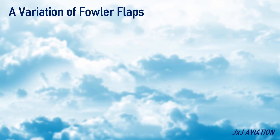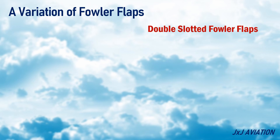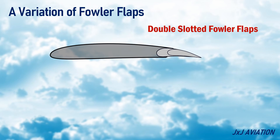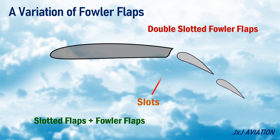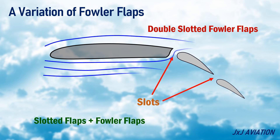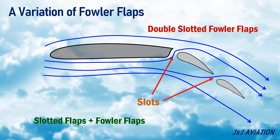A variation of Fowler flaps is the double slotted Fowler flap. This is a combination of slotted flaps and Fowler flaps. The flap moves rearward and then extends downwards. There are two slots in these flaps, which allows air to flow from the bottom of the wing to the top surface of the flaps. This gives a significant increase in the lift that is generated, and a greater angle of extension.